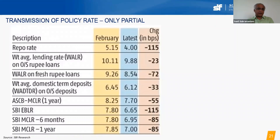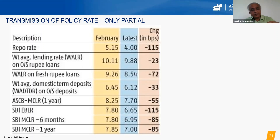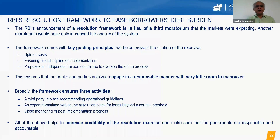Of the 115 basis point repo rate cut, banks passed on only 23 basis points on existing loans, retaining 90 basis points, which improved their profitability. On fresh loans, they passed on 72 basis points but retained 40. They also cut deposit rates by 33 basis points on term deposits. Net-net, the transmission of policy rates was only partial, and banks' net interest margins improved. The concern was NPAs, but instead of a third moratorium extension, the RBI introduced a resolution framework via the Kamath Committee.